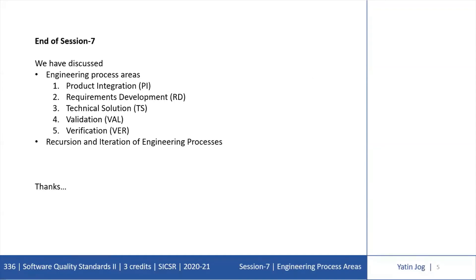This is the end of session number 7. We have discussed Engineering Process Areas in this session, which are Product Integration, Requirements Development, Technical Solution, Validation, and Verification. We have also discussed the methods in which processes can be applied — that is, the method of Recursion and the method of Iteration. Thank you.